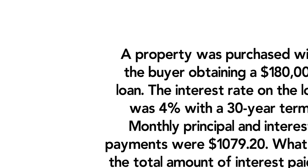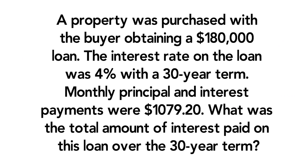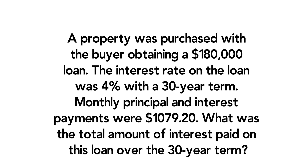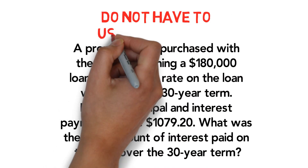Now, a property was purchased with the buyer obtaining a $180,000 loan. The interest rate on the loan was 4% with a 30-year term. Monthly principal and interest payments were $1,079.20. What was the total amount of interest paid on this loan over the 30-year term? This is the one time we do not have to use a T.